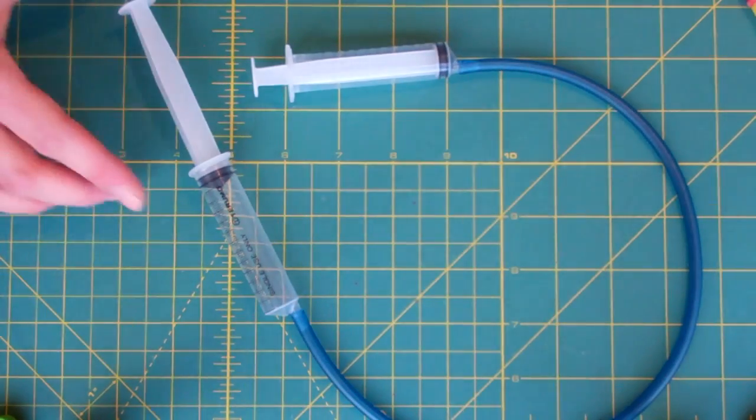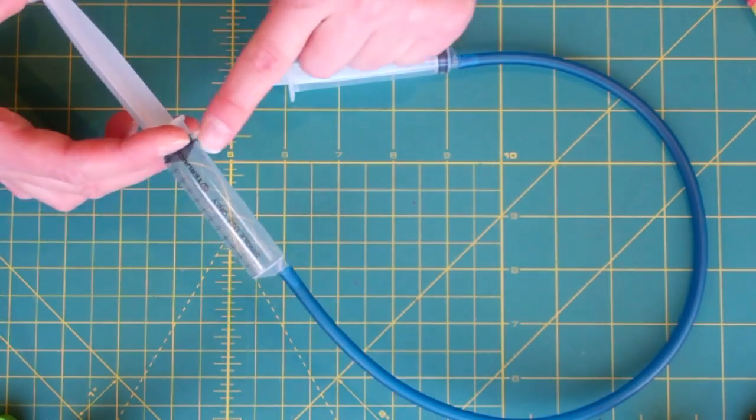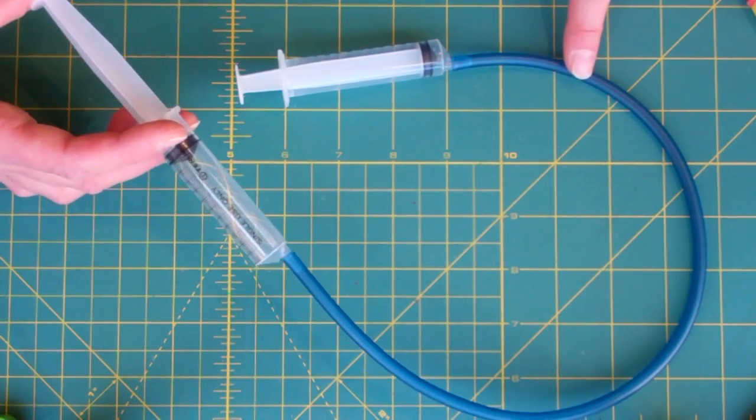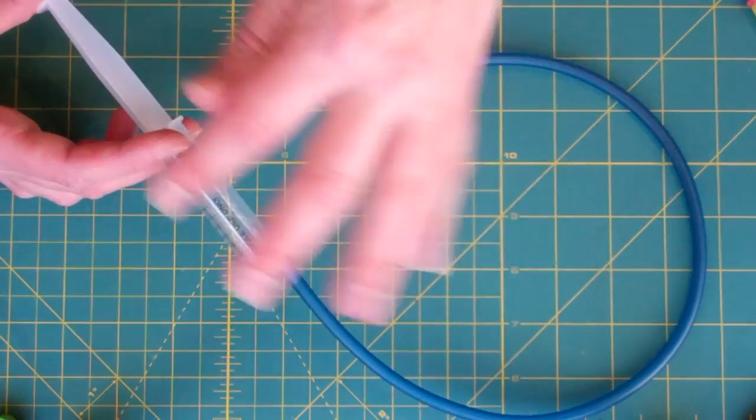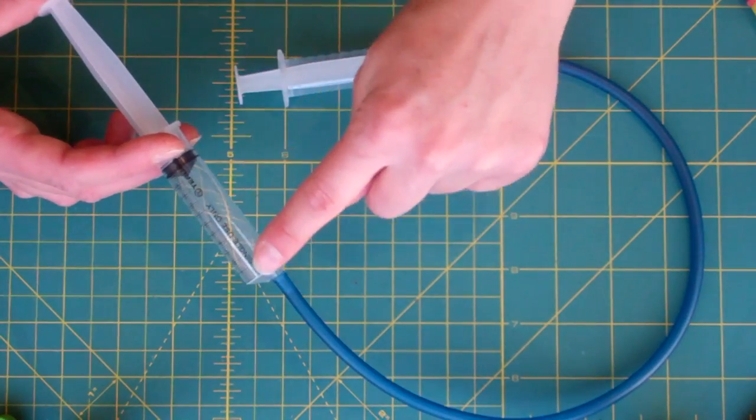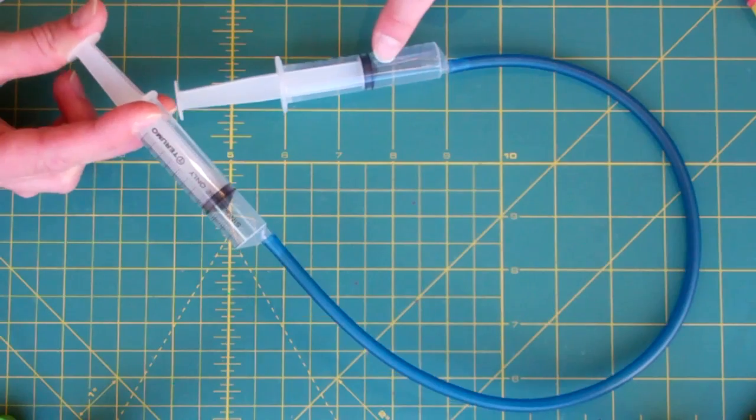And then you better check it works. So what should happen is, as I depress this plunger, I'm pushing this air through the tube and it's got to go somewhere. The air can't just disappear. It feels like there's nothing in the air, but it's not a vacuum. There is actually air and it has to go somewhere. So it comes around the pipe and fills up this.